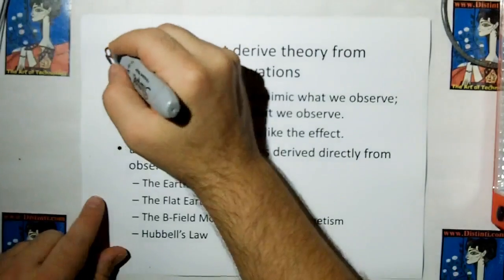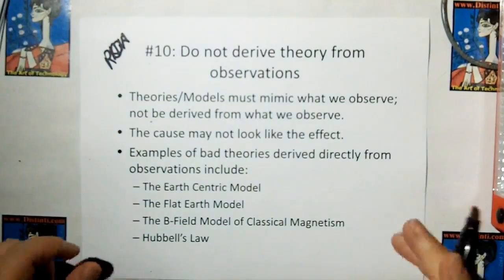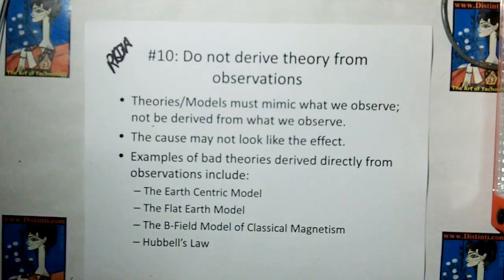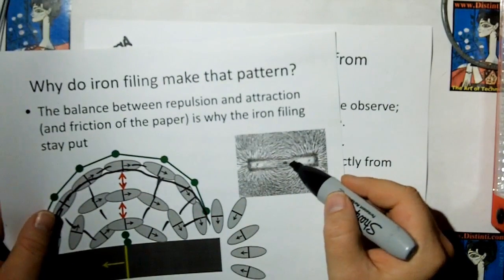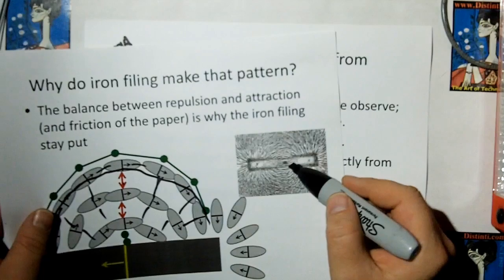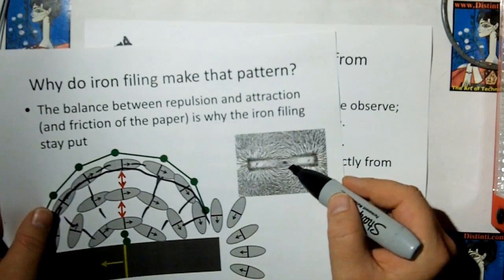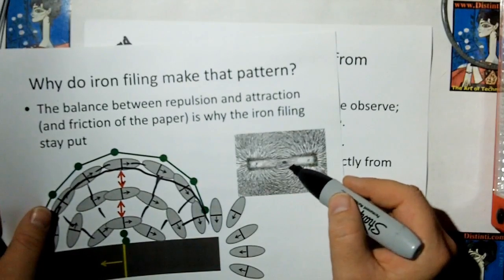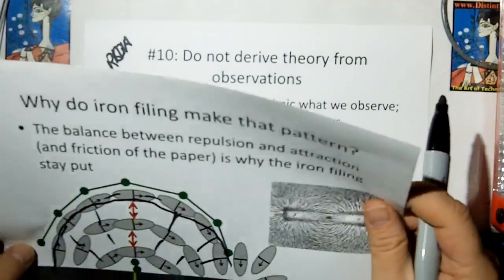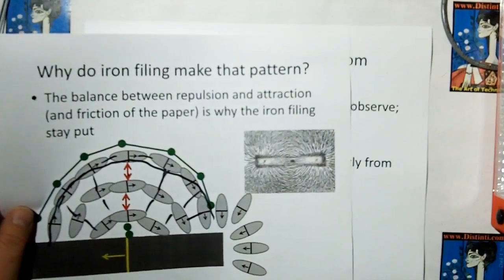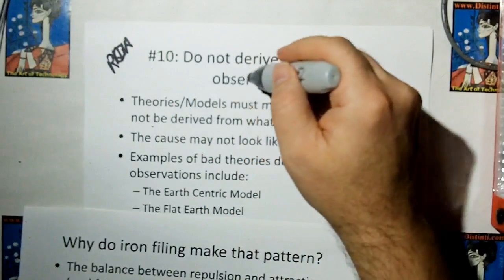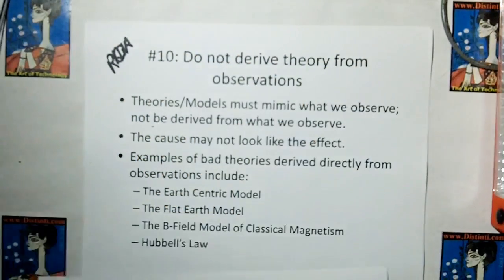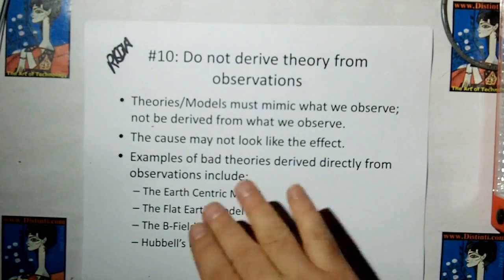And this is why we have rule of acquisition number 10, which says, do not derive a theory from observations. Because the reason why is because the model that they came up for the iron filings did not behave the way the balls behaved, and it didn't follow the way that the blade or the disc of steel behaved. And it doesn't follow the behavior of a disc magnet in this field either. So whatever theory you do come up with has to explain all those different outcomes, and that's the difference. We do not derive theory from observations, but complementarily, theories or models must mimic what we observed, not be derived from what we observe. Because the cause may not look like the effect.